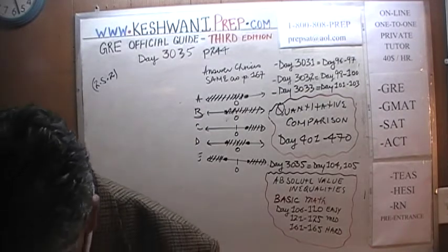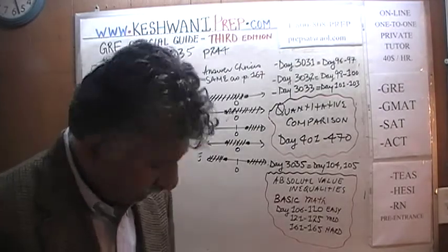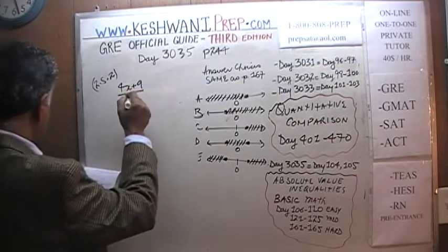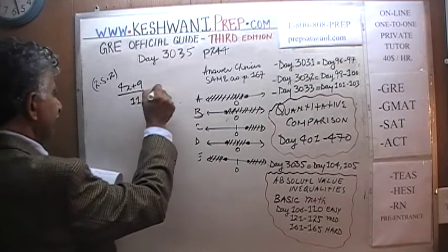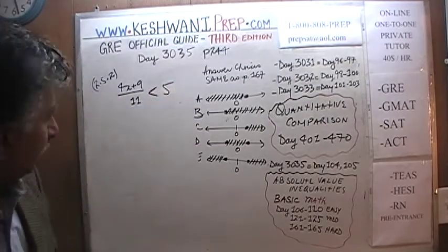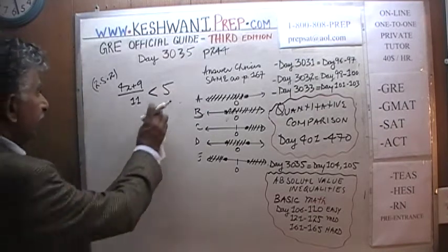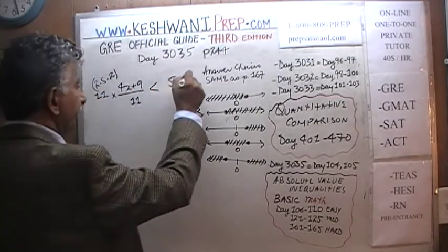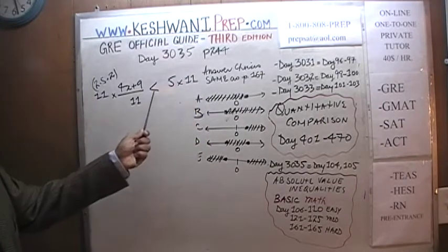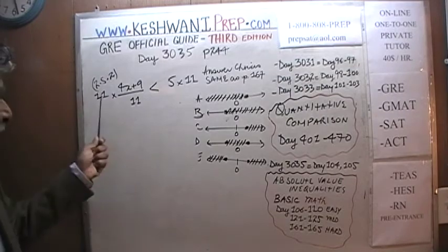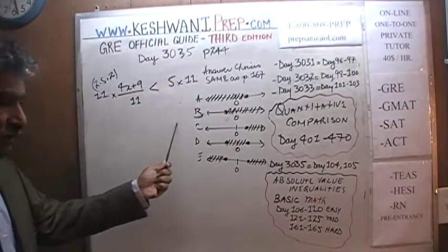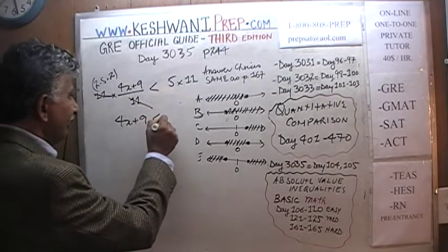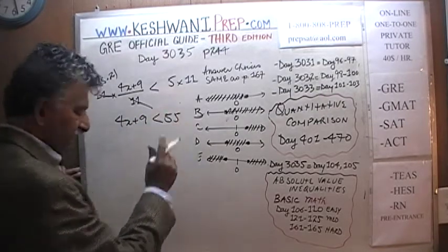The second problem is 2.5.2 on page number 244. It says: (4x + 9) / 11 is less than 5. First thing we need to do is get rid of this 11 by multiplying both sides by 11. Since we're multiplying both sides by a positive quantity, we don't have to worry about switching the direction. So 11 goes away and we end up with 4x + 9 is less than or equal to 5 times 11, which is 55.